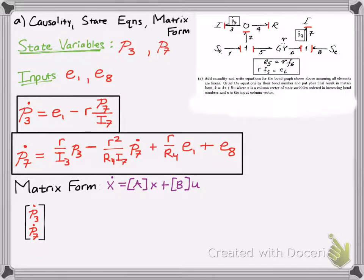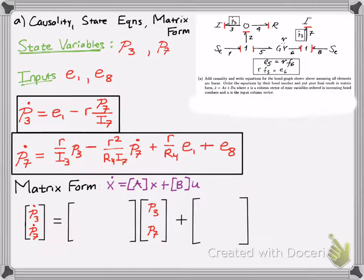We have our state variables on the left side of the equation, equal to some matrix, which will be the coefficients, times our X's, which in this case are our state variables, P3 and P7. And then we have plus the coefficients of our inputs. And we have two inputs in this case, so we're going to have the matrix look like this, E1 over E8. Now to find the coefficients, we already have the state equations, we just got to write it in matrix form. So look at P3 dot. Are there any P3 terms in that equation? No, so we put a big zero. Are there any P7 terms in that equation? Yes, the coefficient in front of P7 would be negative R over I7, right?